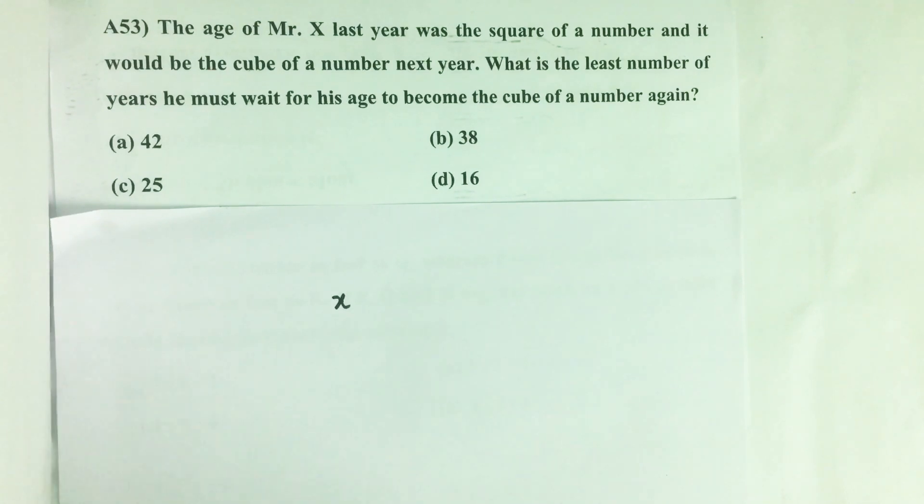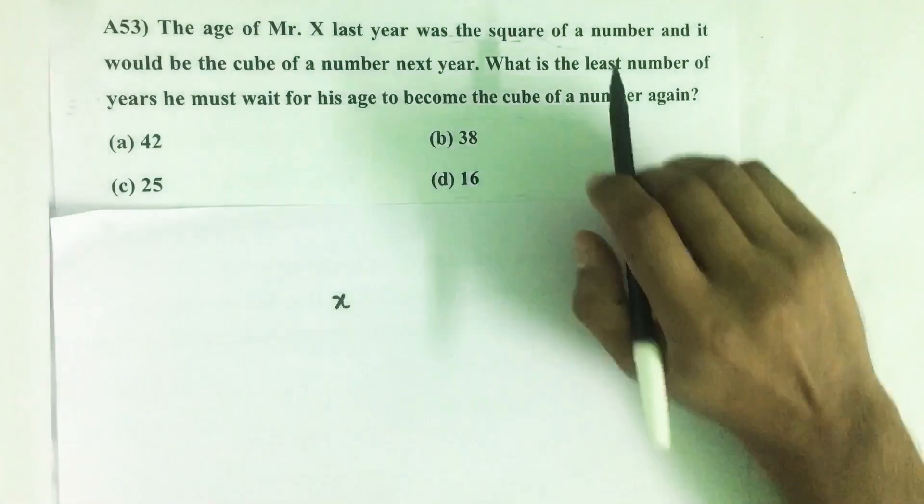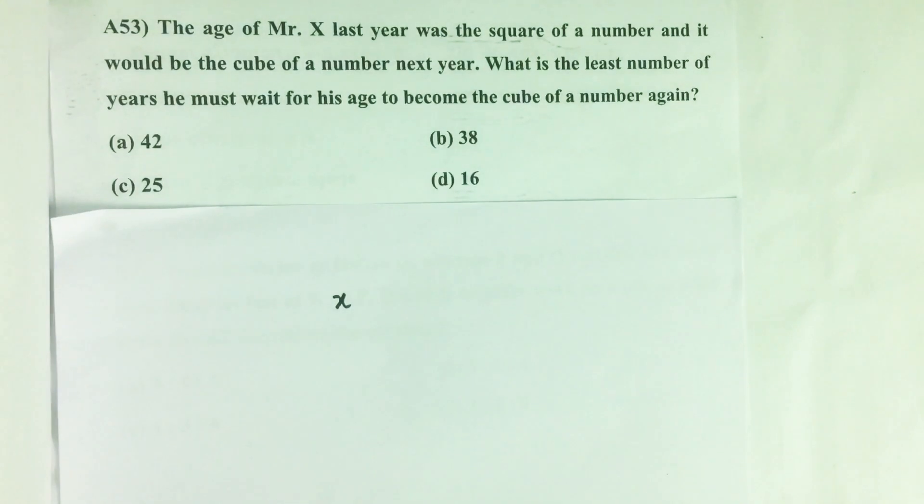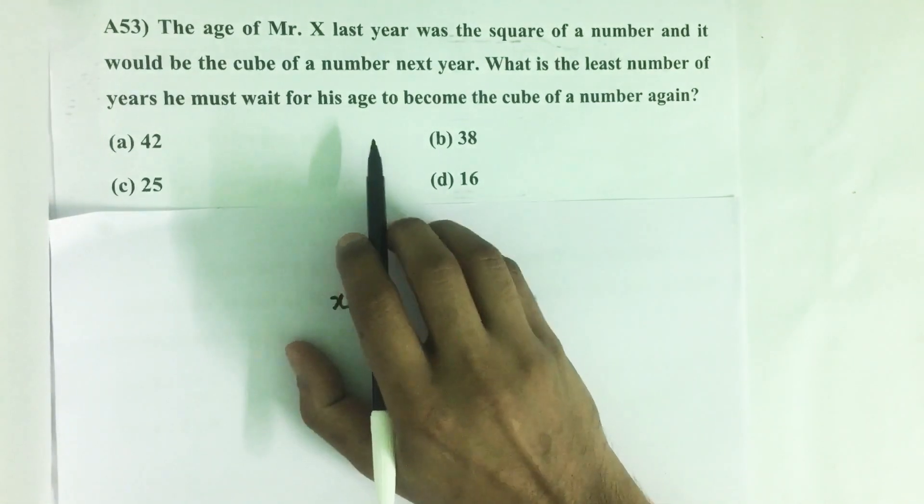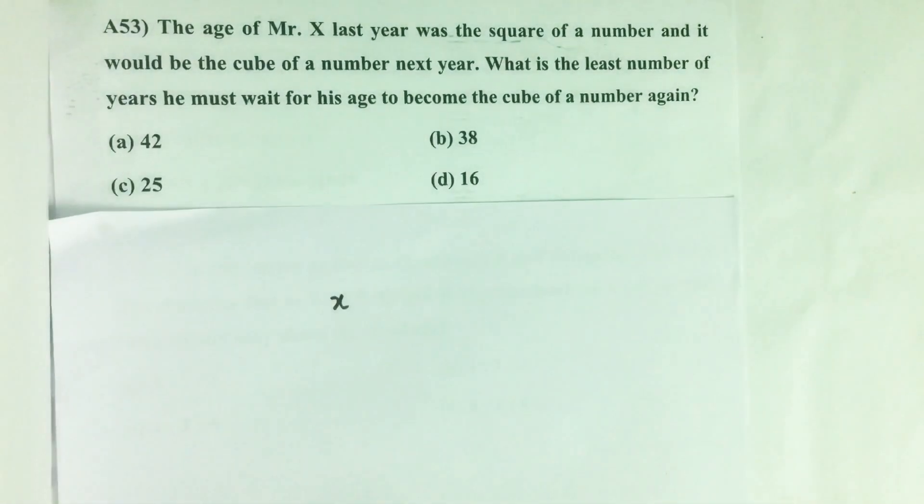The age of Mr. X last year was the square of a number and it would be the cube of a number next year. What is the least number of years he must wait for his age to become the cube of a number again?